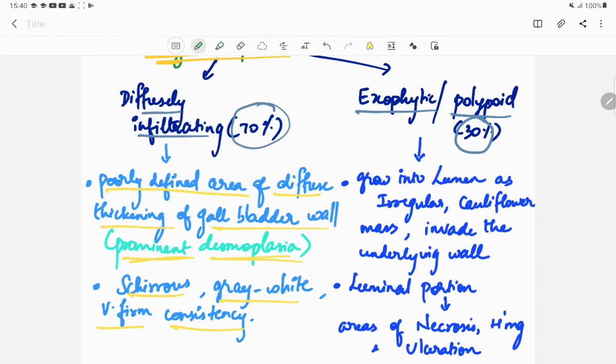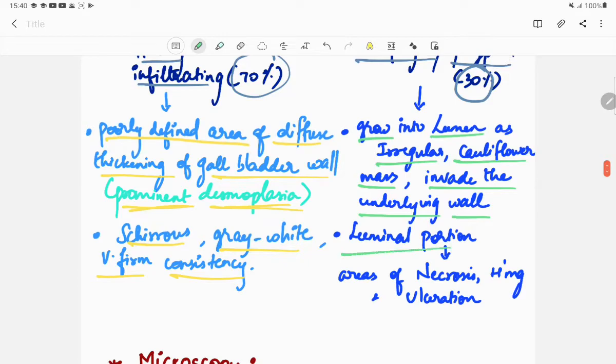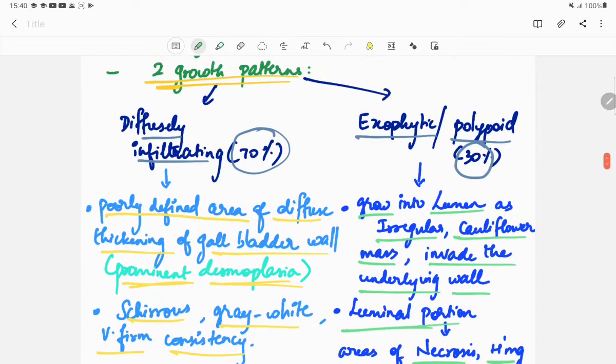Next is the exophytic or polypoid pattern. It grows into lumen as irregular cauliflower mass and invades the underlying wall. The luminal portion shows areas of necrosis, hemorrhage, and ulceration. This is the gross.